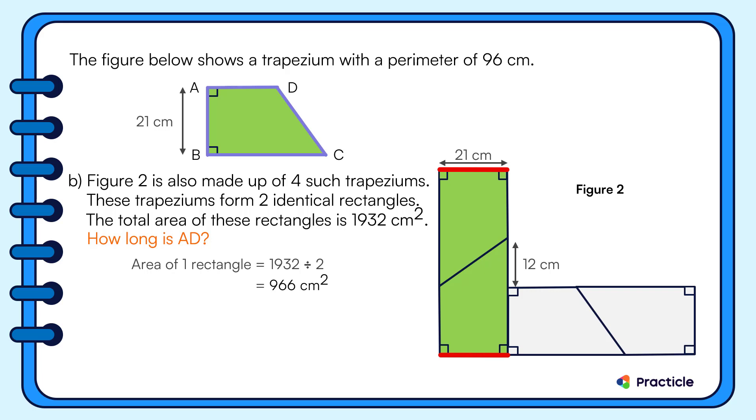So this means that this side and this side are 21 centimeters each. And this, my dear boys and girls, happens to be the breadth of our rectangle. What good news, right? So let's make use of this to find the length of our rectangle. When we divide the area of this rectangle by its breadth, we'll get 46. And this brings us really close to our answer.